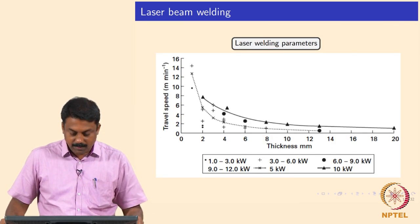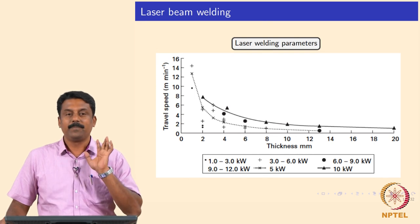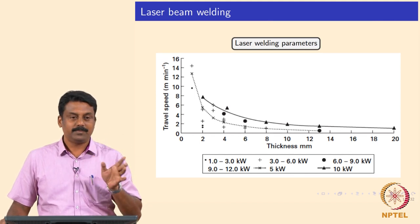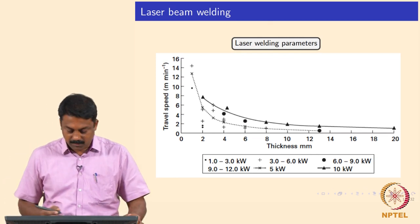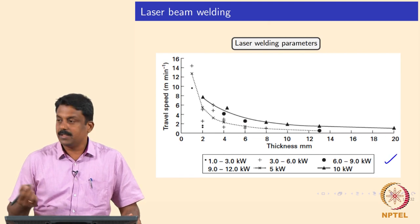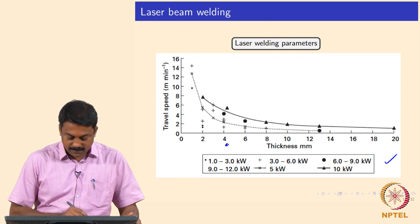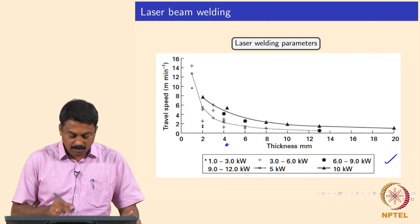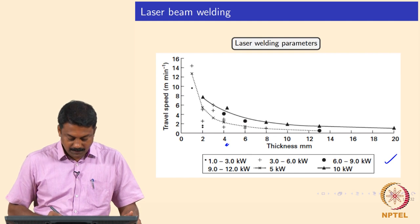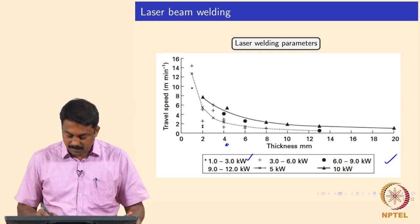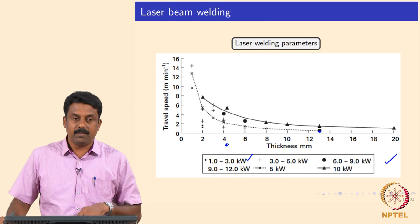Typical laser welding parameters - when you have lasers, the two controlling factors are laser power and welding speed, that is it. These are what determine the penetration. For example, from a graph taken from John Norrish - if you are welding a 4 mm thick plate, the travel speed depends on your power level. If you are using 1, 2, or 3 kilowatt lasers, you need to use a very slow speed, and obviously if you are using higher power for larger thicknesses, you can establish a process window as a function of laser power and travel speed.